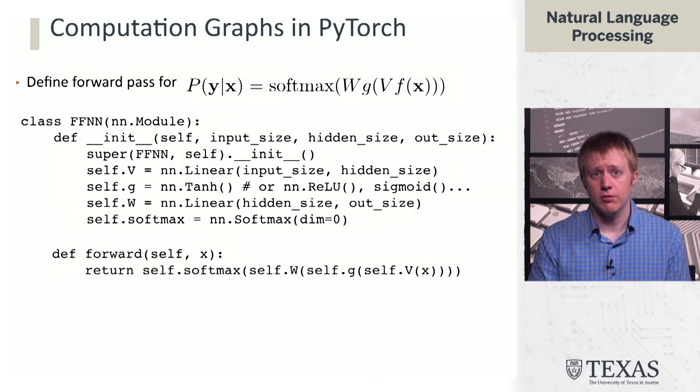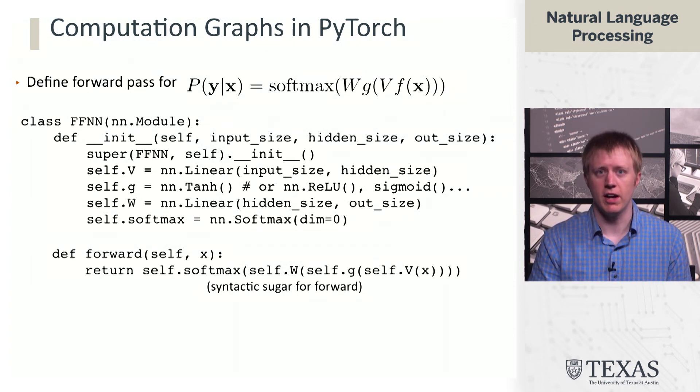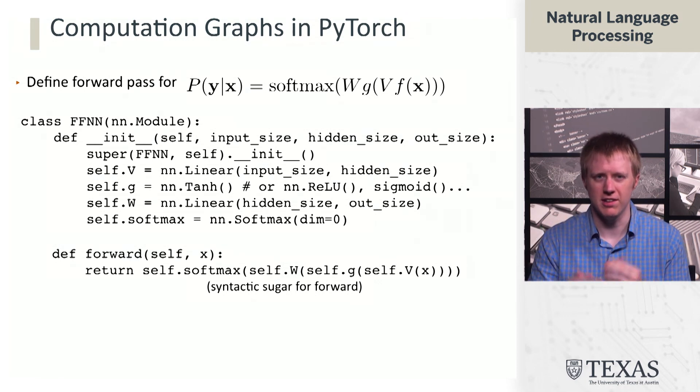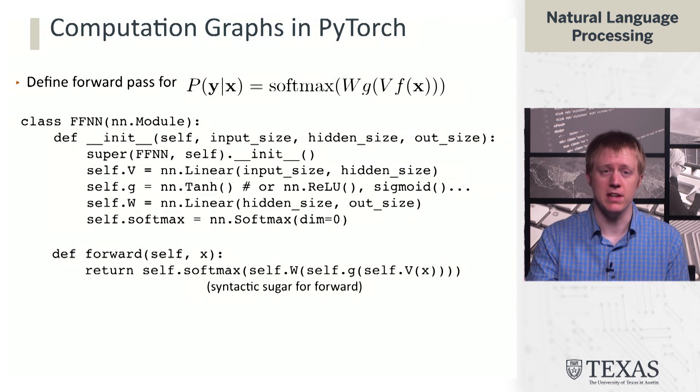The forward then has this fairly simple form where we don't actually have to call forward on each of these layers. We can just use apply. So self.v of x, multiply by V, apply G, multiply by W, apply softmax. You can look up at the math above, and it is a very direct translation from the way that we've defined this mathematically into this forward function.